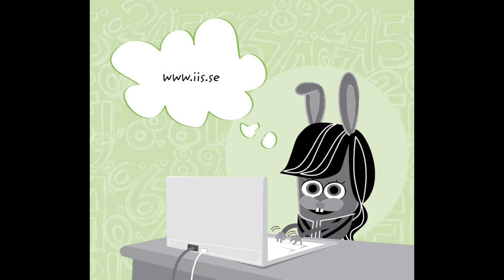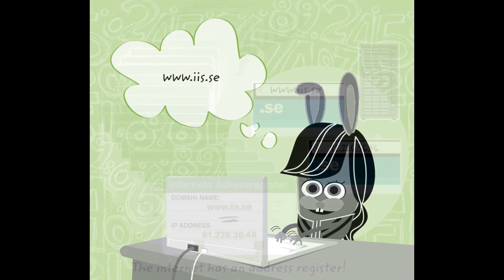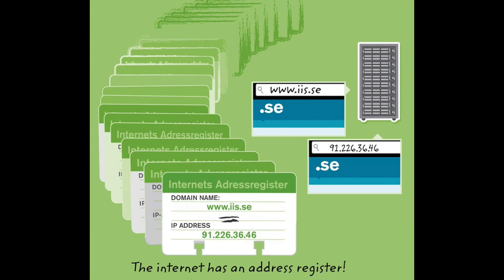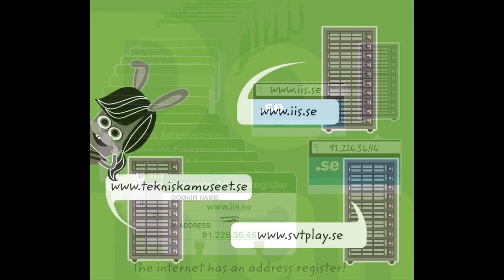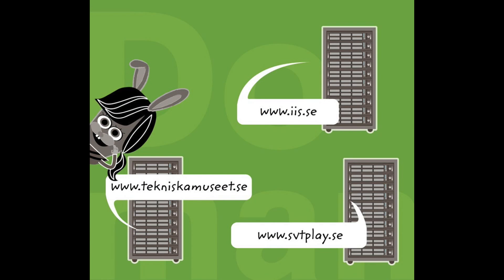That is why computers translate number addresses to letters. As people, we read and talk with words and letters, not with numbers. If you write or click on a link to a web address, your computer then contacts the right server with help of the internet's address registry. But actually, the address is translated to a set of numbers and points. Addresses on the internet can be short, like iis.se, or long, like www.techniskamuseet.se. An address with letters instead of numbers is called a domain name. It is the servers that have domain names, not the computer, mobile, or tablet.